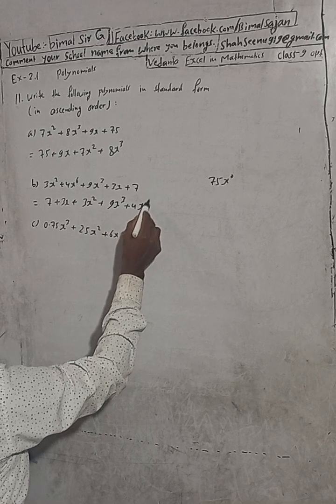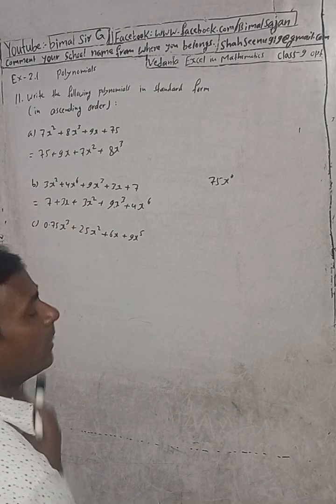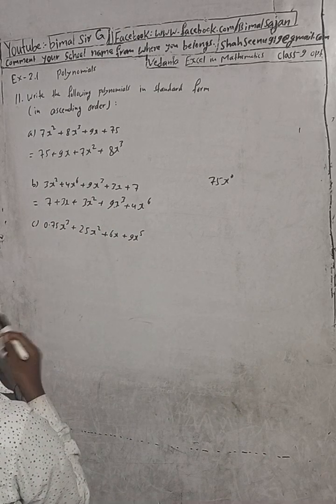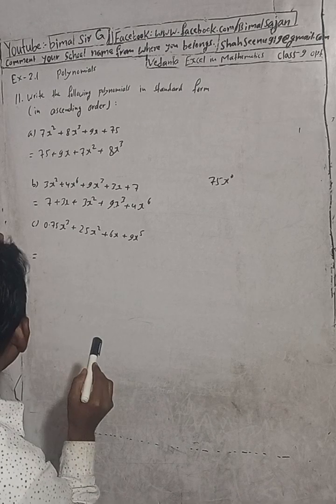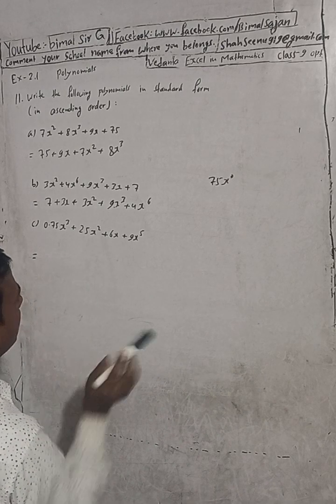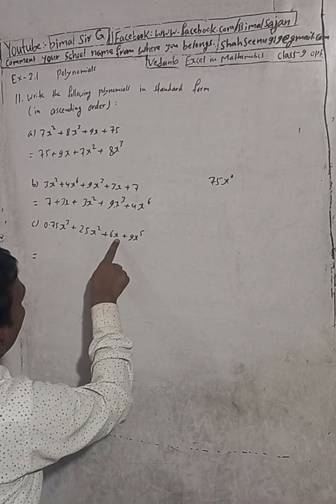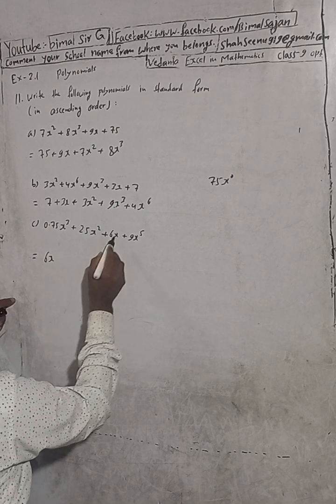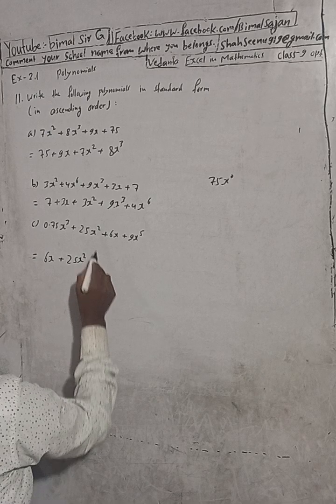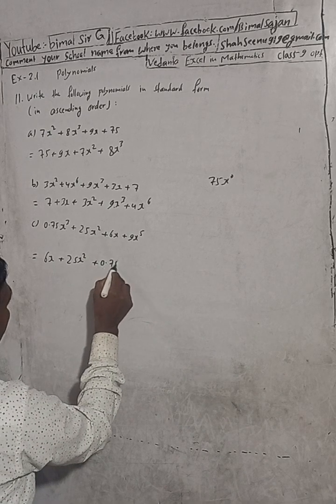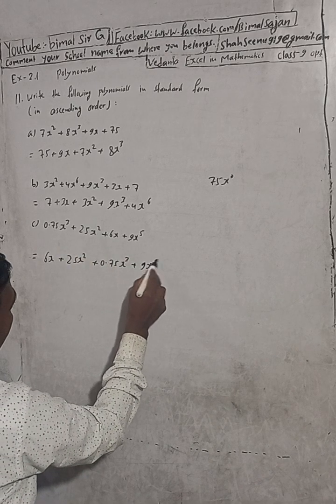For part c, we have the constant term, then plus 6x for power 1, then plus 25x squared for power 2, then plus 0.75x cubed for power 3, and plus 9x to the power 5. This is the solution.